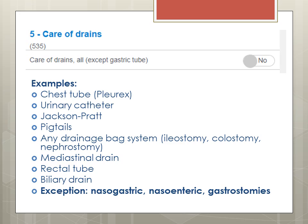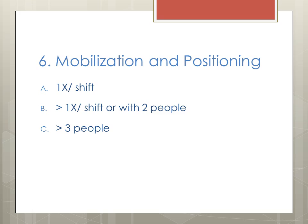One of the questions is a yes or no type where you will either pick yes or no — for example, yes, your patient has a urinary catheter. Mobilization and positioning is a question with options A, B, or C based on your workload. Option A means you mobilized the patient once during your shift, which is rare in the ICU at the Royal Victoria Hospital. Option B means you mobilized the patient more than once, or it takes two people to move the patient. Option C means you need at least three people to mobilize the patient.